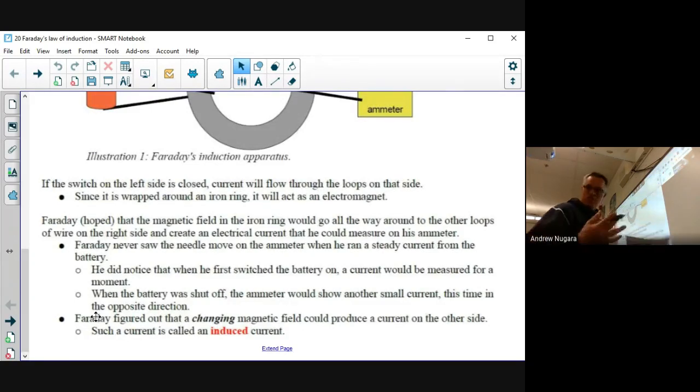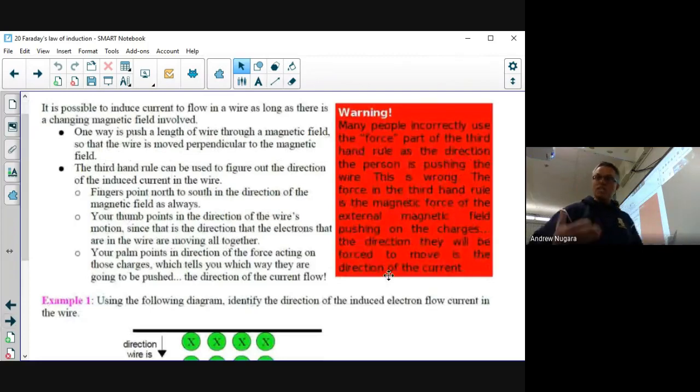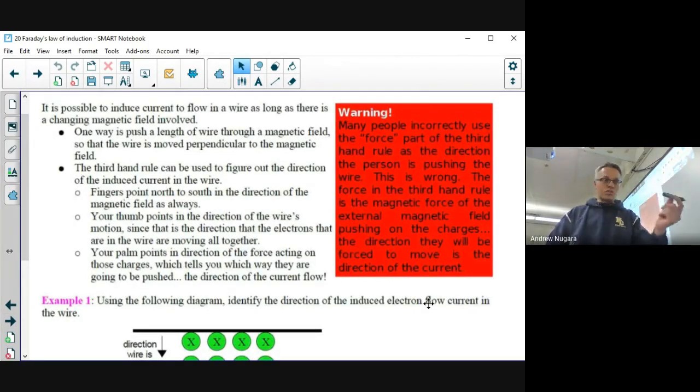Faraday figured out that a changing magnetic field could produce a current on the other side, and he called this an induced current—just like we have induced electric fields in the electrostatics unit. It's an induced current and it's only produced by a changing magnetic field.